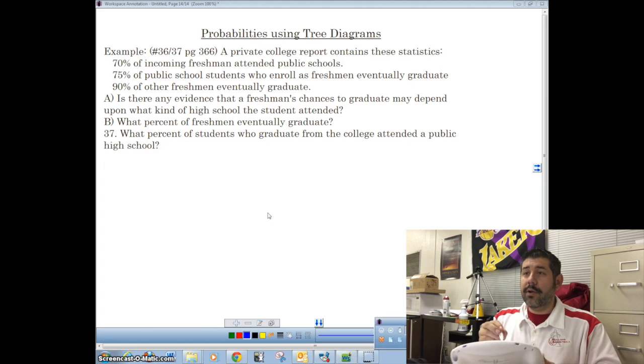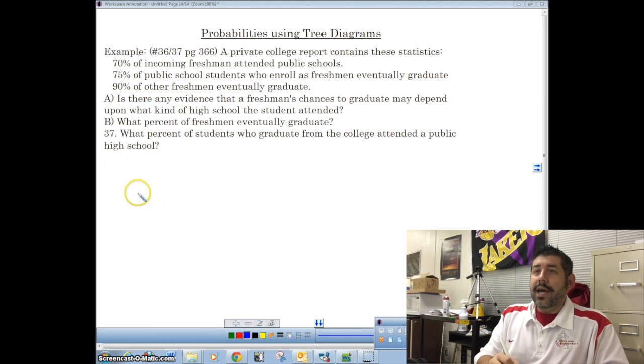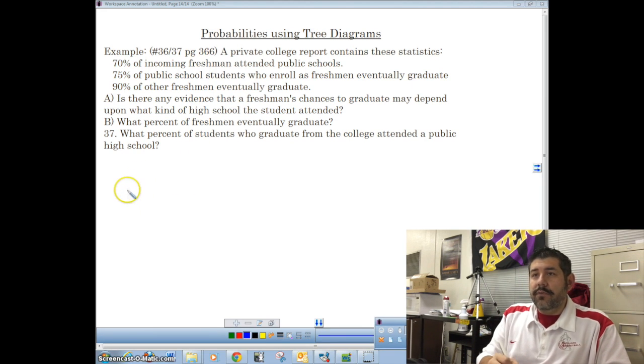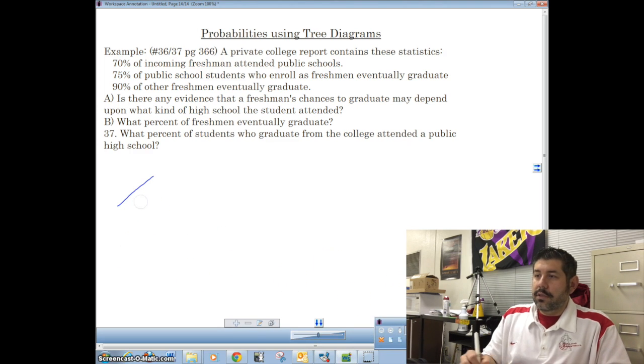You see how there's a difference in graduation rate depending upon whether they were freshmen from a public school or freshmen from a private school. So that's when we're going to use a tree diagram. Let me show you how we're going to do this. Let me go and draw my tree diagram. These are the events that are occurring.